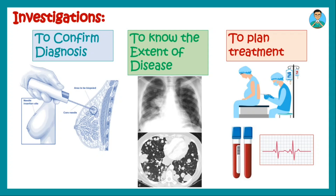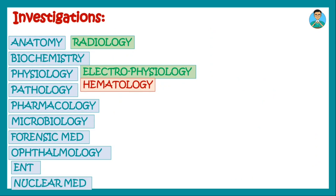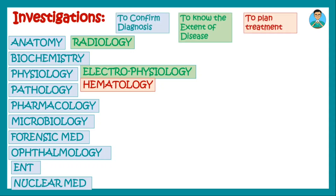Based on these two approaches — the subject-wise approach including anatomy, radiology, biochemistry, physiology, pathology, and others, and the purpose-wise approach of confirming diagnosis, knowing the extent of disease, and planning treatment — you can create a grid of investigations. From that grid, you can easily choose which investigations to perform to reach a final diagnosis. This is how a hospital works towards patient care and treatment.